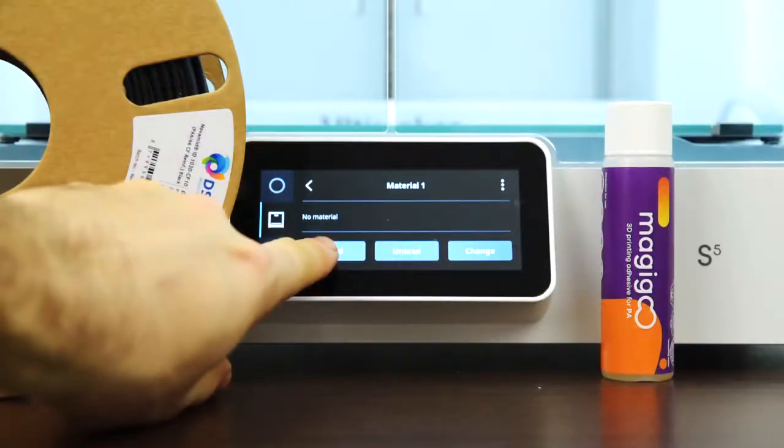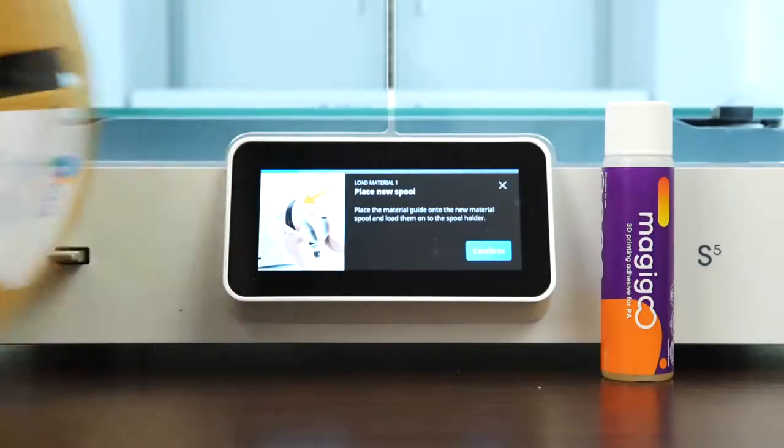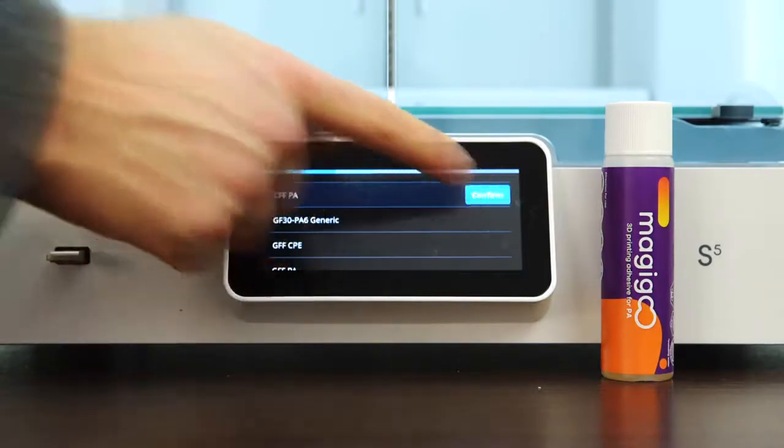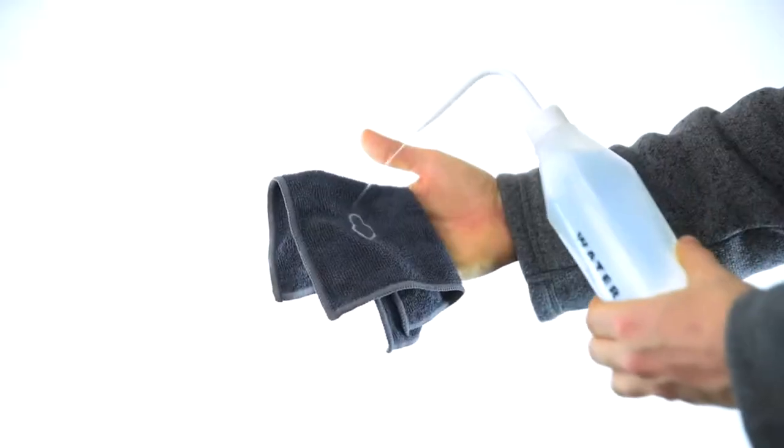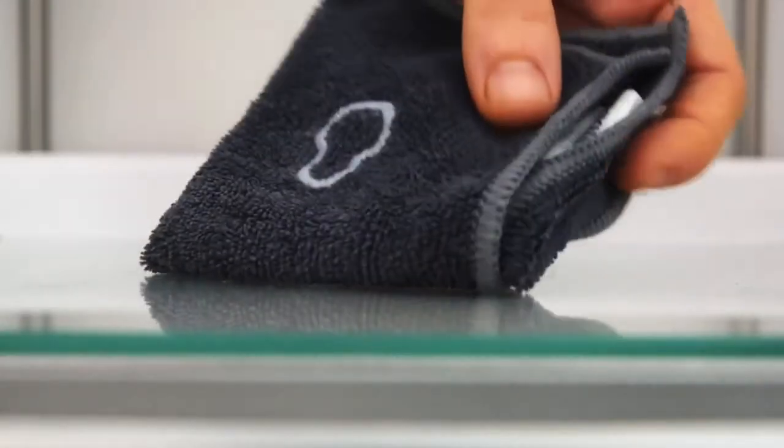Set up your 3D printer for printing with the desired filament and get the suitable Magigoo. Before applying, lightly wet a cloth with water and clean your 3D printing surface well.